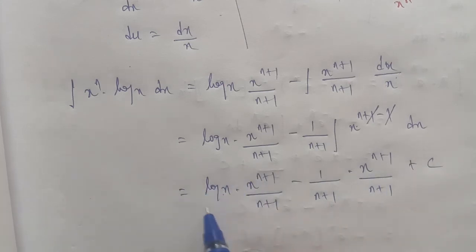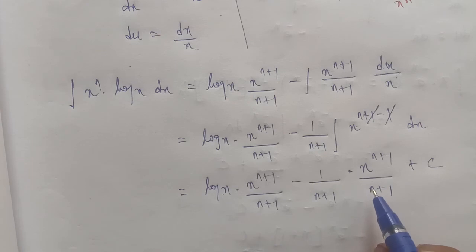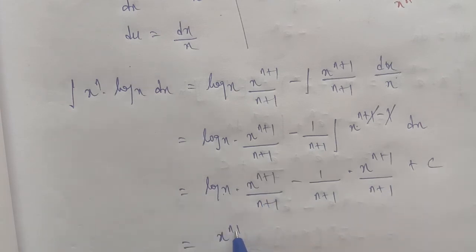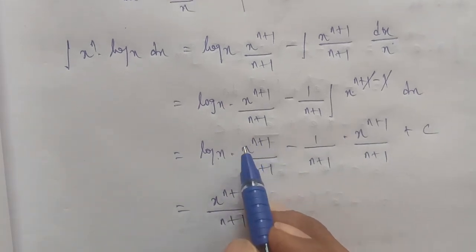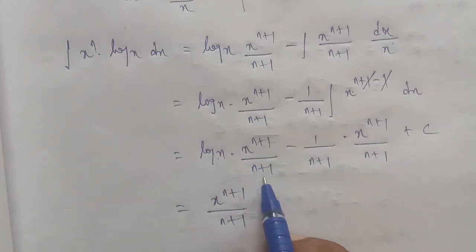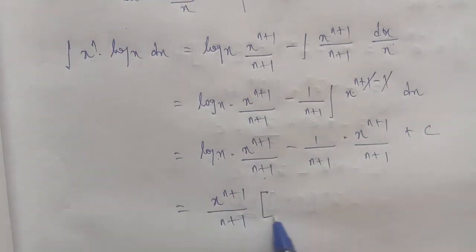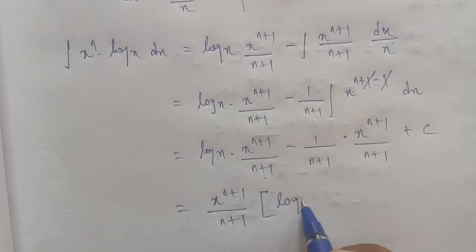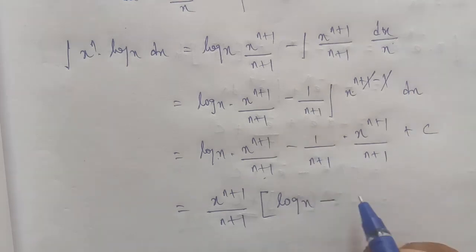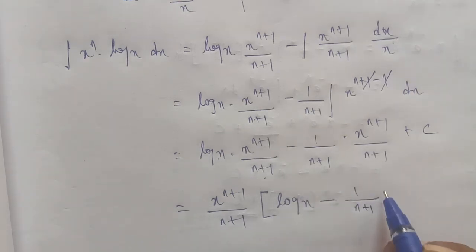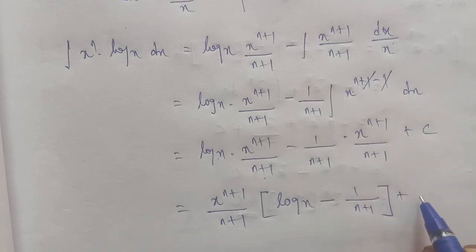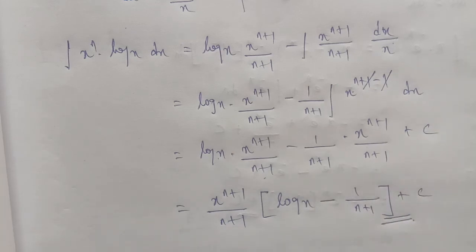Now the common term is x power of n plus 1 by n plus 1. Taking this as a common factor, the final answer is x power of n plus 1 by n plus 1 multiplied by log x minus 1 by n plus 1, plus constant C.